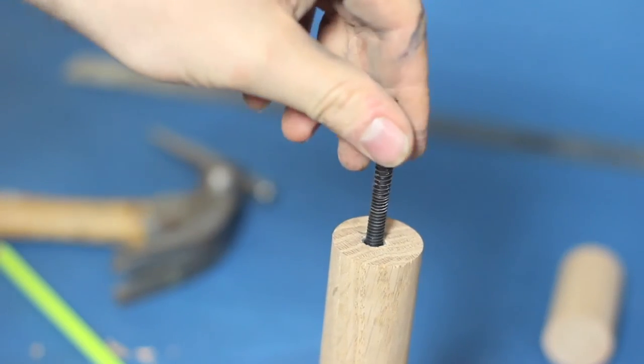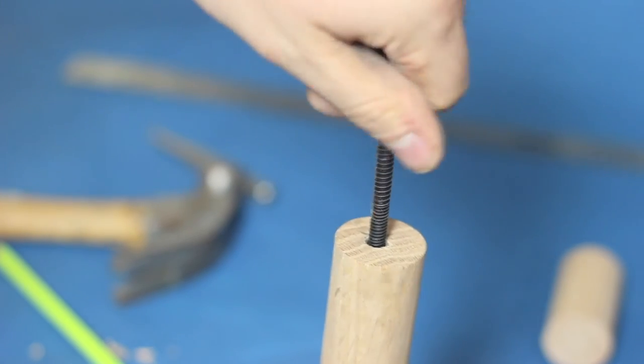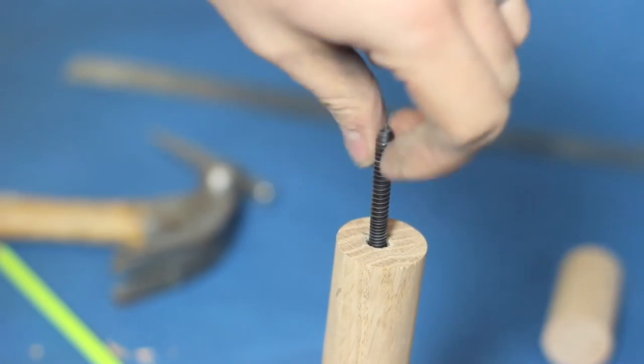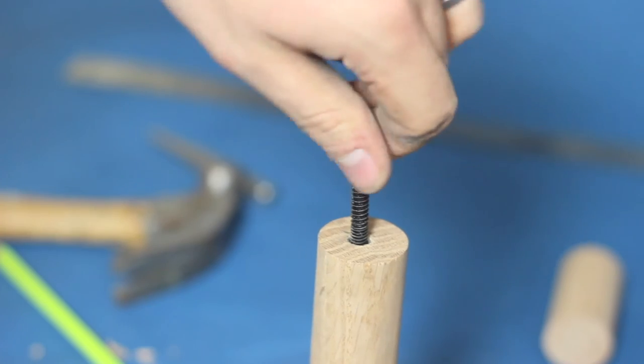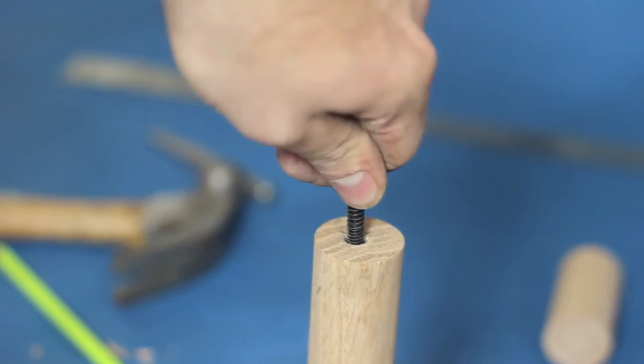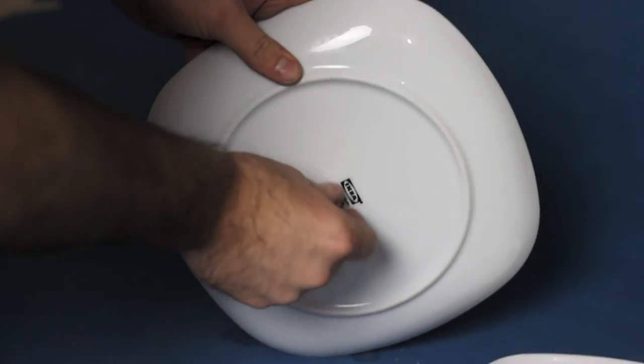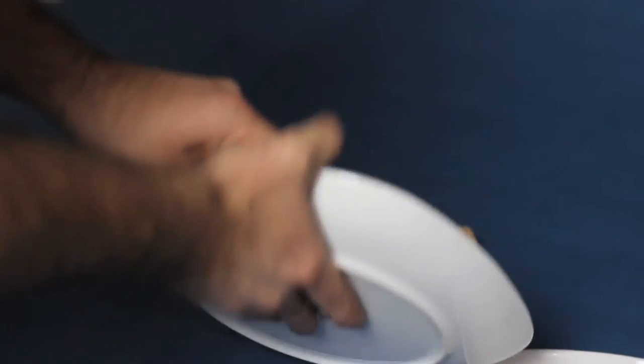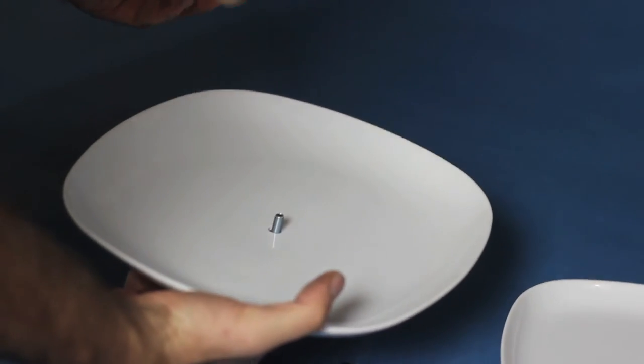Screw the hanger bolt into one of those insert nuts. Place the crown bolt through the bottom of the large plate and thread it into the long dowel until it's tight.